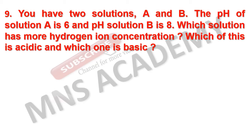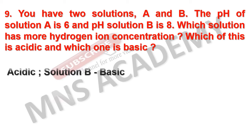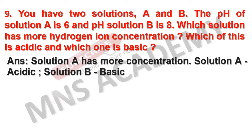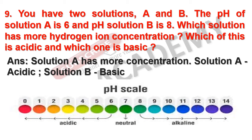You have two solutions, A and B. The pH of solution A is 6 and the pH of solution B is 8. Which solution has more hydrogen ion concentration, and which is acidic and which is basic? Solution A has more hydrogen ion concentration because its pH is 6. Solution A is acidic and solution B is basic. On the pH scale, 7 is neutral, 0 to 6 is acidic, and 8 to 14 is alkaline (basic). Solution A at pH 6 has a higher hydrogen ion concentration, while solution B is alkaline.